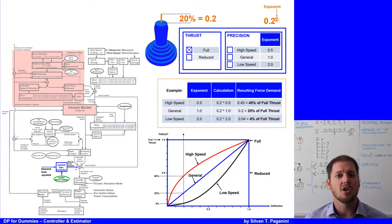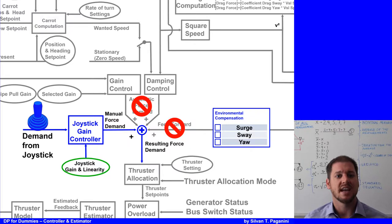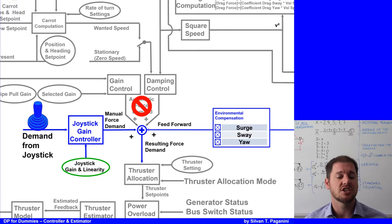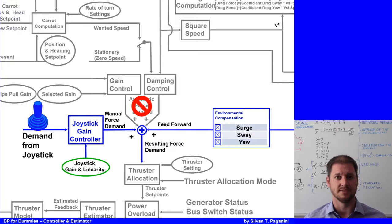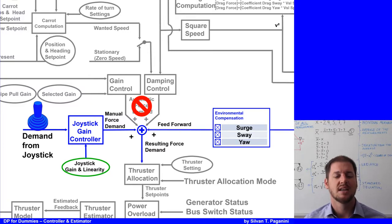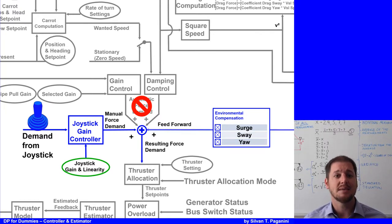To help the DPO using joystick control compensate for environmental forces, the operator can select environment compensation for each axis — surge, sway, and yaw — separately. If selected, the system automatically compensates for wind force acting on the vessel by allowing the feed-forward to pass through the thruster allocation, so the thrusters use the necessary extra thrust in the appropriate direction. If a position reference system measurement is available in joystick mode, the DP system will also compensate for the aero force, including sea current and wave forces acting on the vessel.